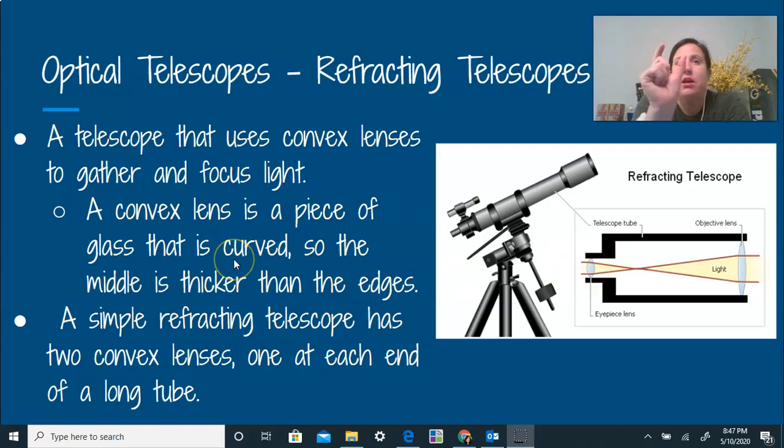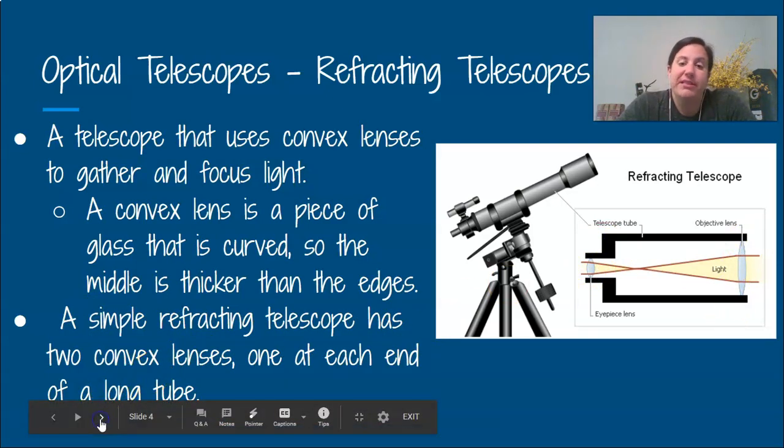So the convex lens, it gets thicker in the middle. So it kind of goes out. So it starts off thin and it gets thicker in the middle and then it's thin again. So the simple refracting telescope is going to have two convex lenses, one with your eyepiece and one with your objective lens. And then in between, it's got that long tube.